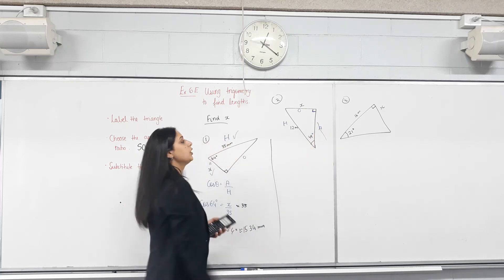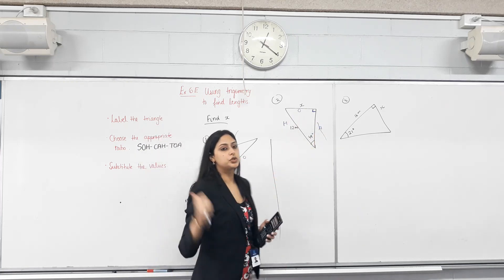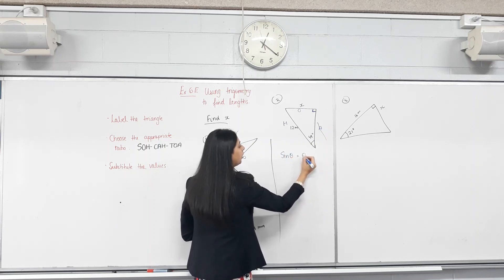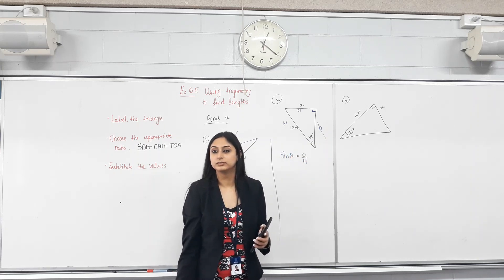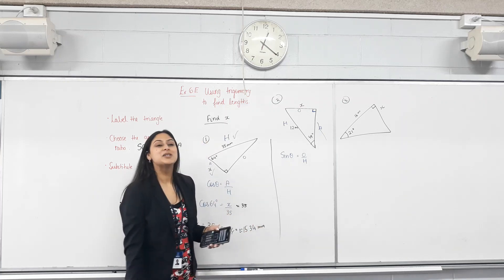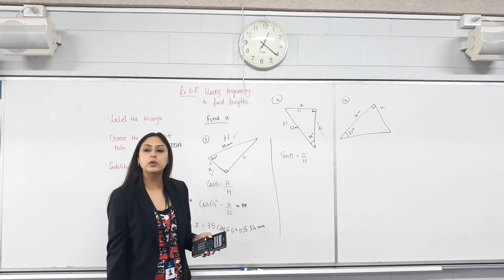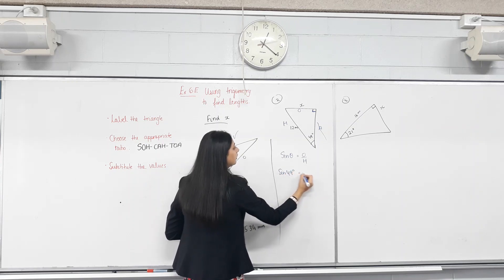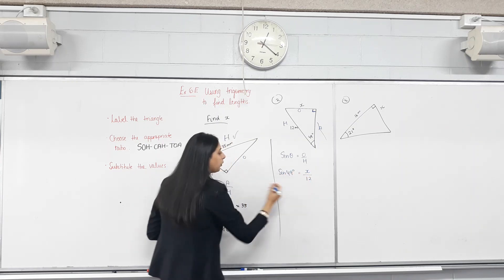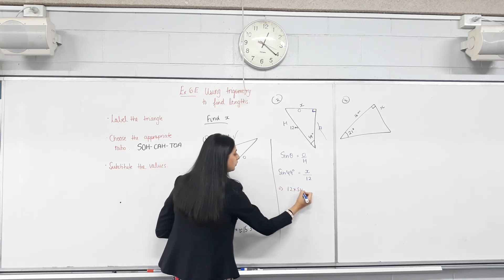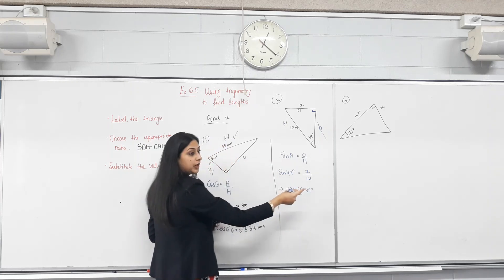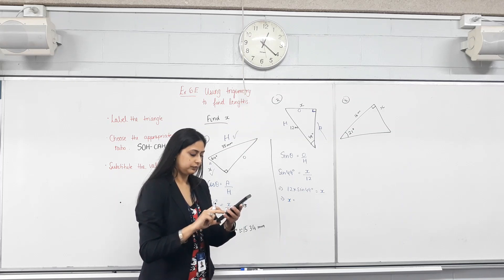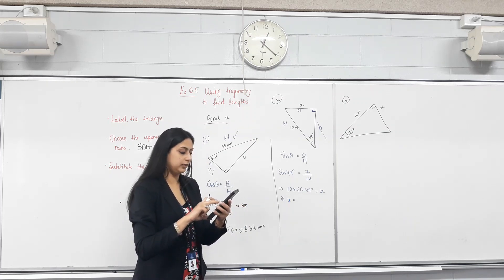Do we need the adjacent at all? No. So which two sides are we using? O and H. Choose the ratio — that's sine. Sine θ = O over H. Let's put in the numbers — what's theta? 49 degrees. What's the hypotenuse? 12. So x = 12 × sine 49°. Type that into your calculators.